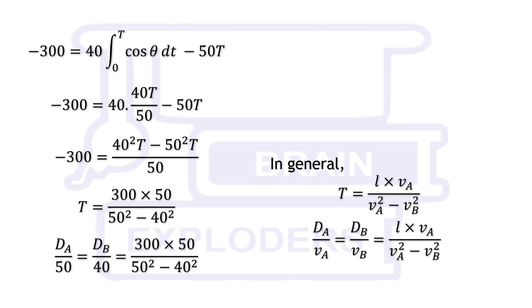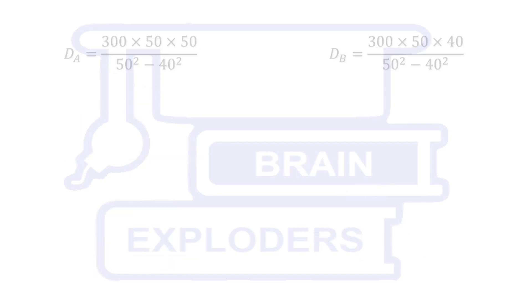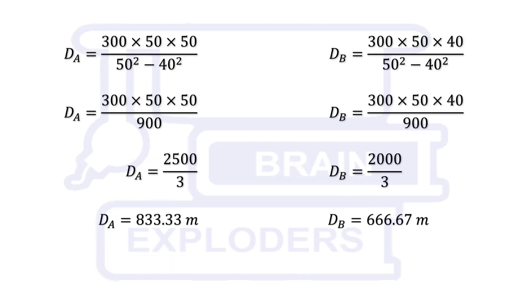Time taken is equal to distance travelled over speed. On further solving, we get d_A equals to 833.33 meters and d_B equals to 666.67 meters.